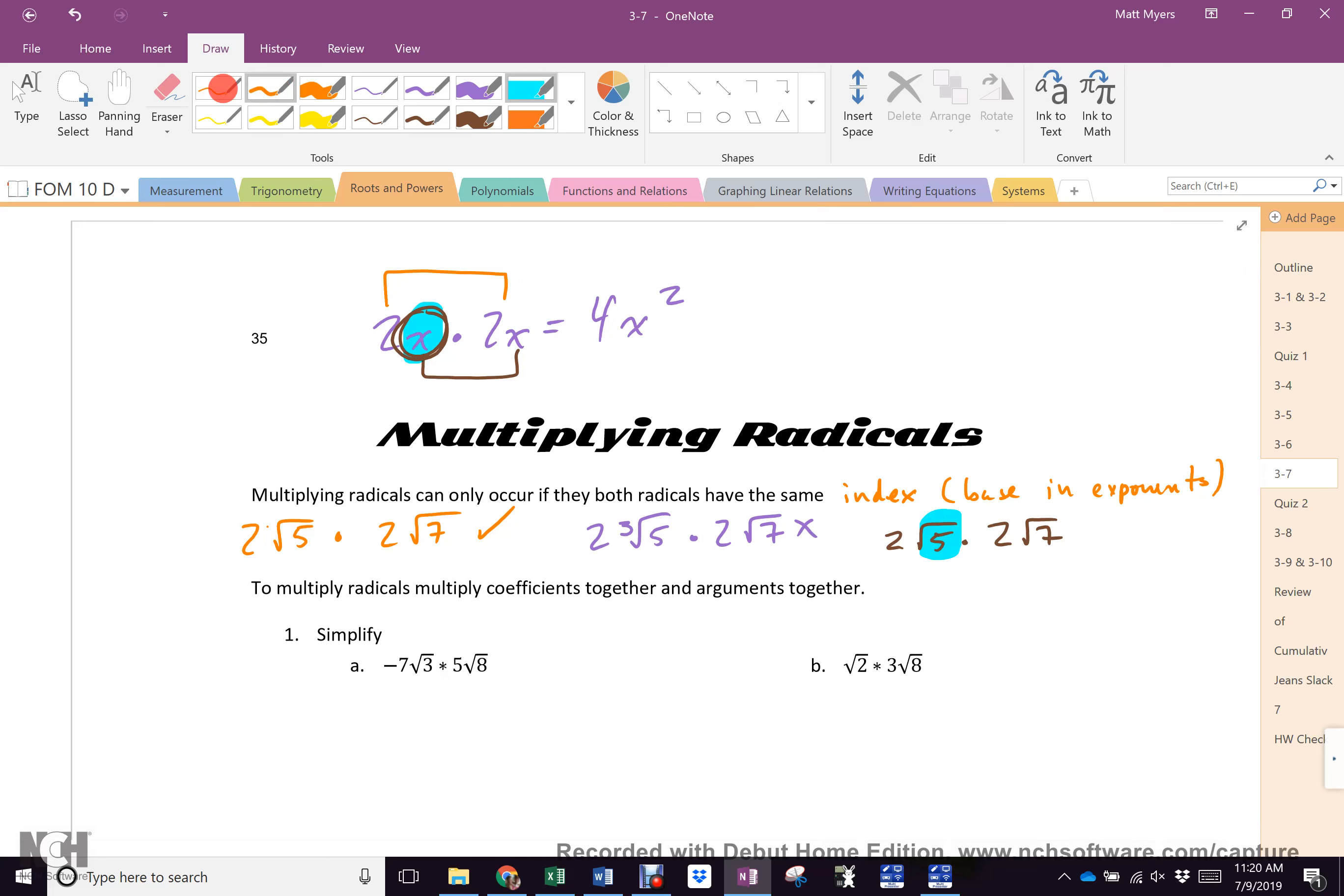So this, 2 root 5 times 2 root 7, is just the same. Numbers go with numbers. 2 times 2 equals 4. And then, just like we did x times x, we do the square root of 5 times 7, which is 4 root 35. That's it. That's all you do. It's that simple.